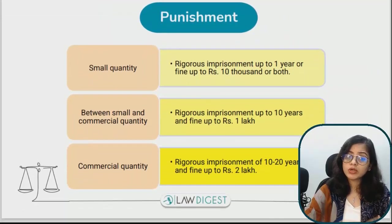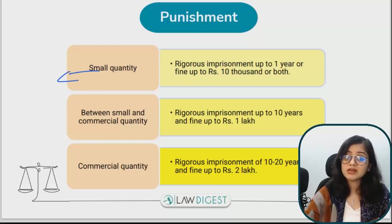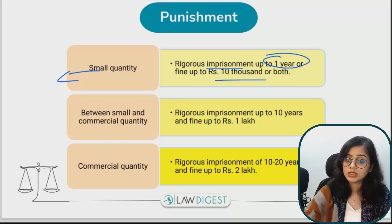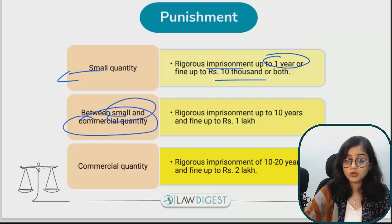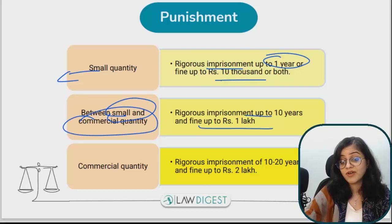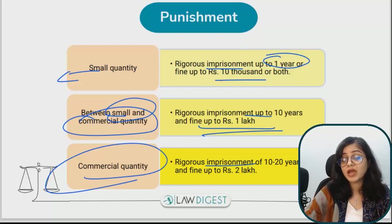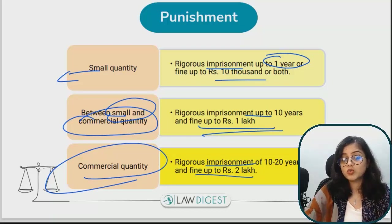For small quantity — less than what has been prescribed by the government — the punishment is rigorous imprisonment up to one year and a fine of up to 10,000 rupees, or both. If the quantity is between small and commercial, then imprisonment is up to 10 years and a fine of up to 1 lakh rupees. In commercial quantity cases, imprisonment is 10 to 20 years, meaning a minimum of 10 years, and a fine of up to 2 lakh rupees.